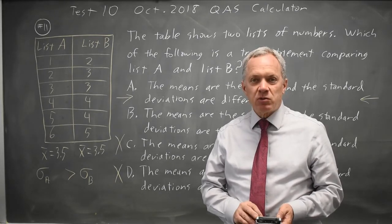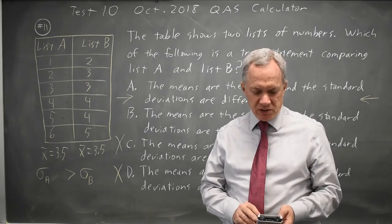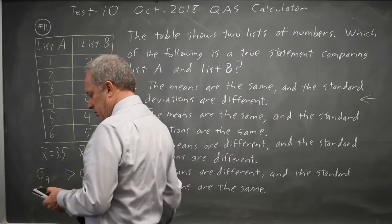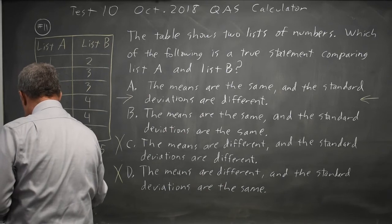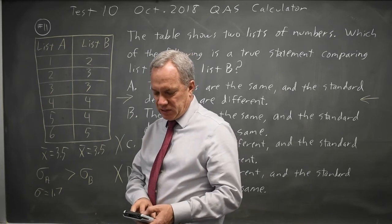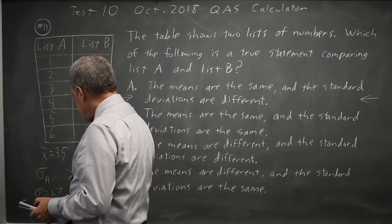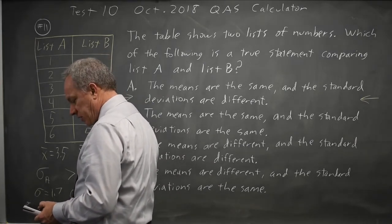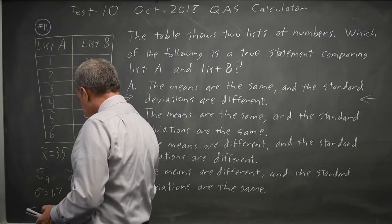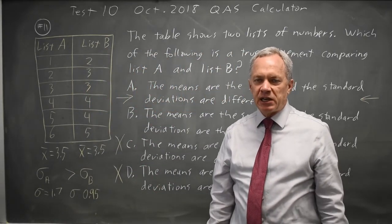Stat, calculate. One variable statistics on each one or just two variable statistics on list 1 and list 2 gives me the mean for list 1 is 3.5. Standard deviation is 1.7. And you can use either sigma or S for standard deviation on any College Board SAT question. If you're in AP Stat, you should know which one to use. In this case, it won't ever matter. Sigma Y is .95. And as I predicted from the numbers being more spread out, list A has a larger standard deviation.